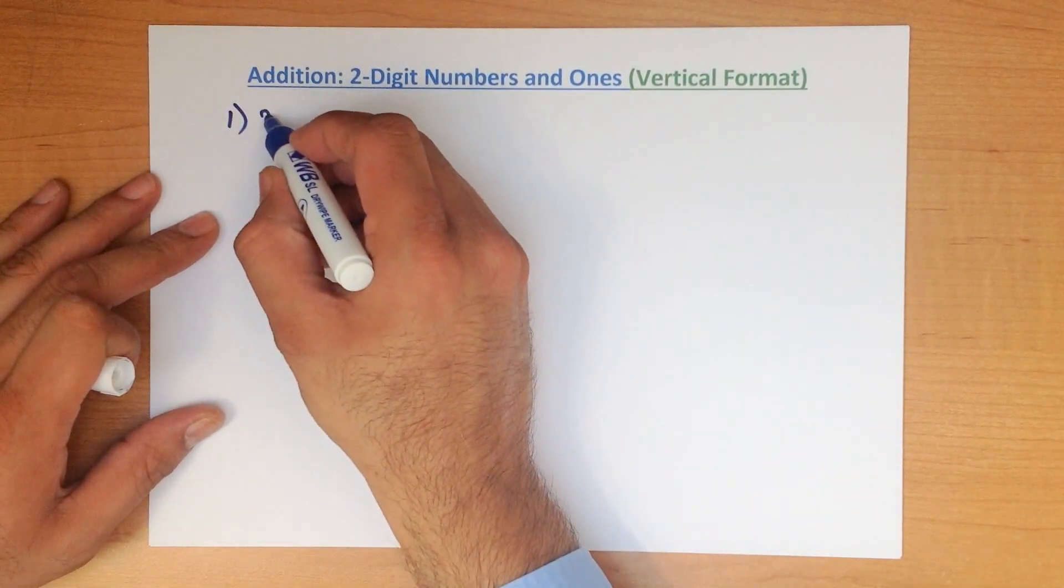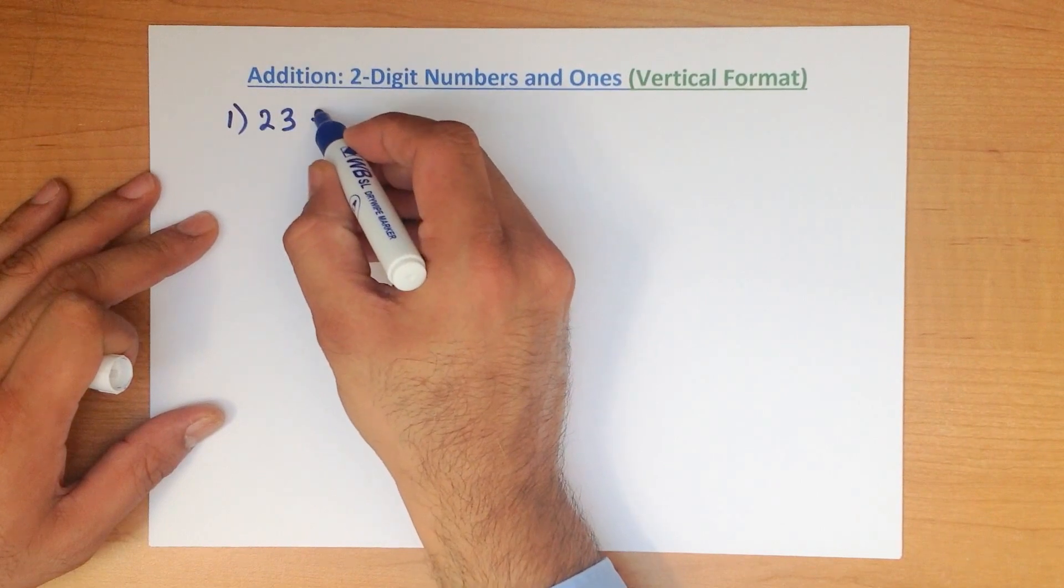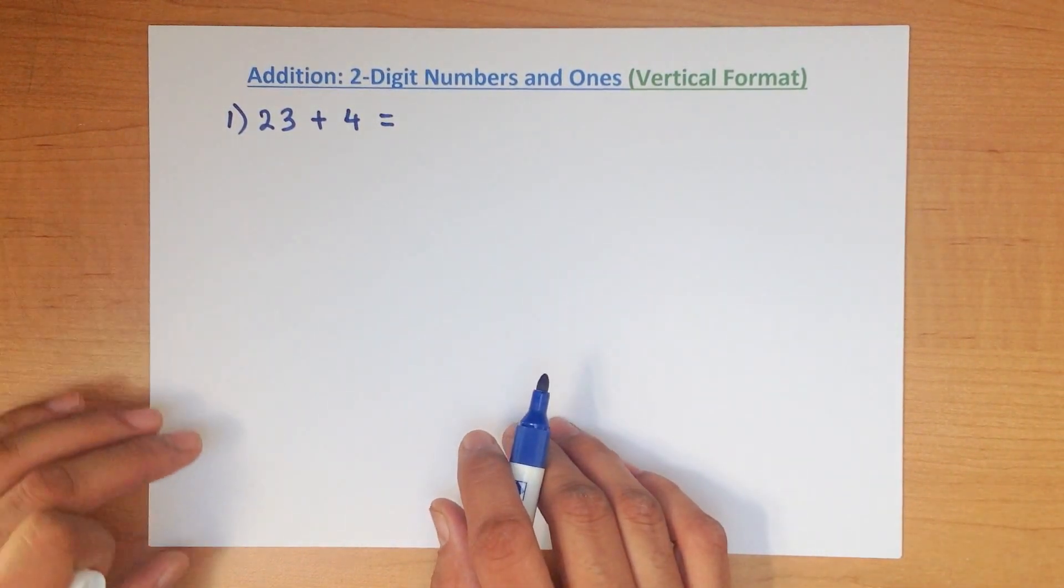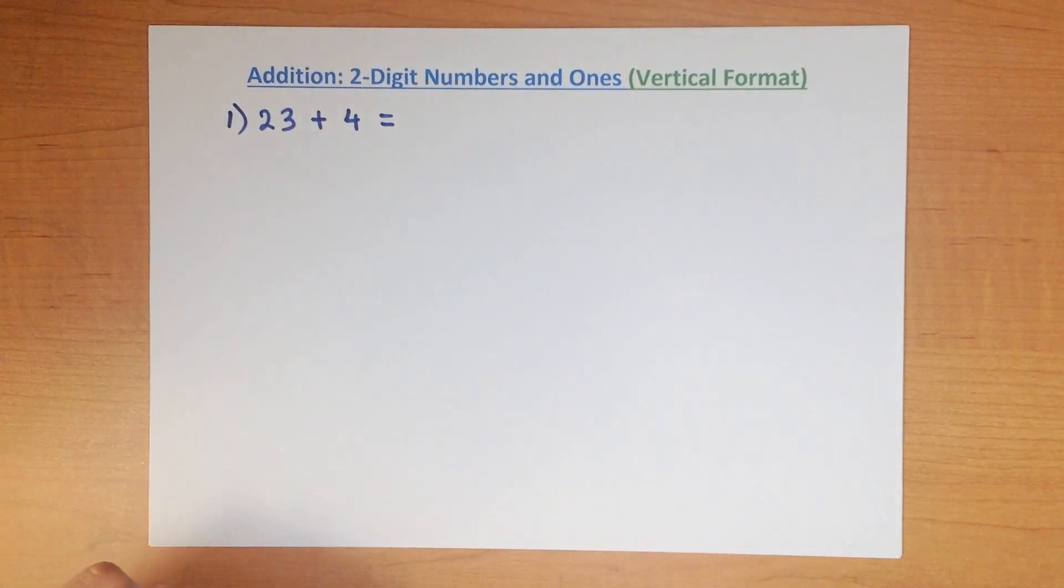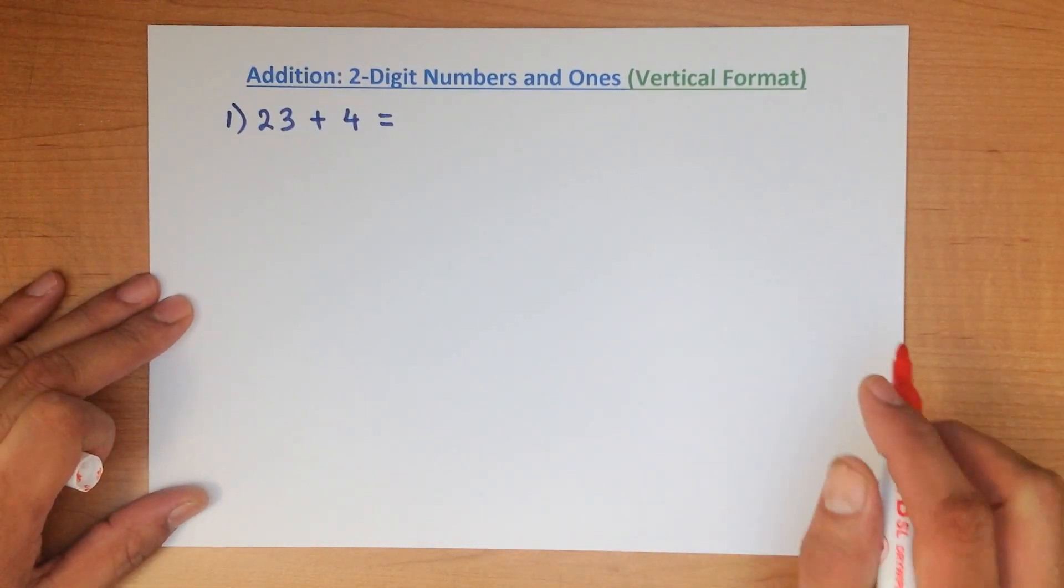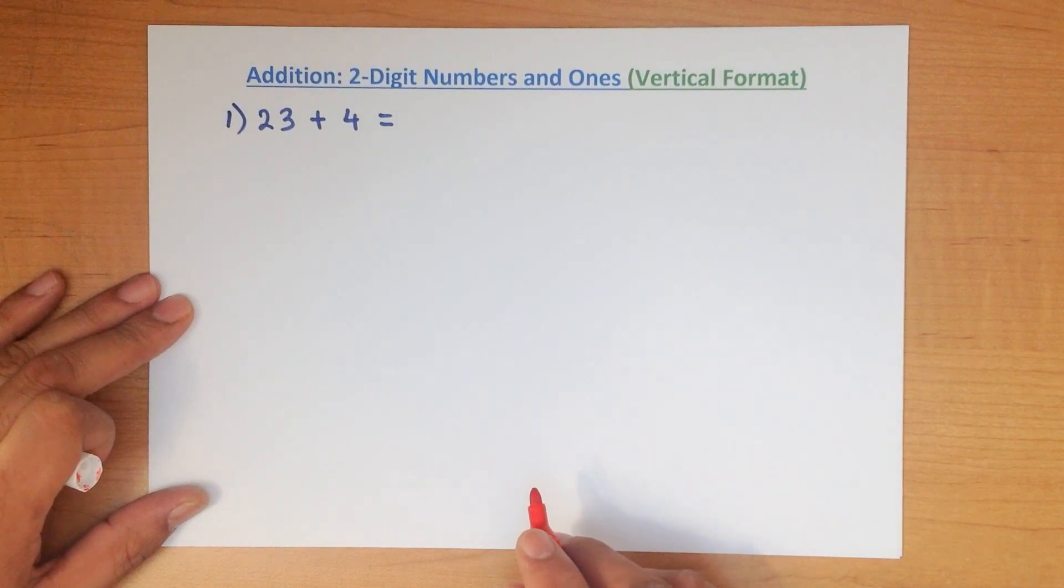What is 23 plus 4? Now I'm sure most of you can do this just by counting from 23, adding 4 to 23, but we're going to use the vertical format because once we learn this method we can add much, much larger numbers.